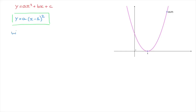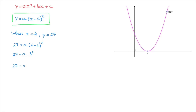The fact that this parabola passes through the point (4, 27) allows us to state that when x equals 4, y must equal 27. Replacing x with 4 and y with 27 in our root factored form gives: 27 equals a times (4 minus 1) squared, which is 27 equals a times 3 squared, which is 27 equals 9a. Dividing both sides by 9 gives 27 over 9 equals a — that's a equals 3.